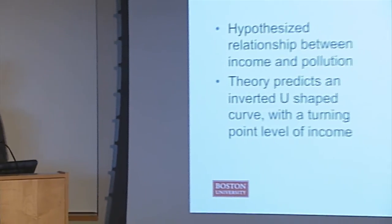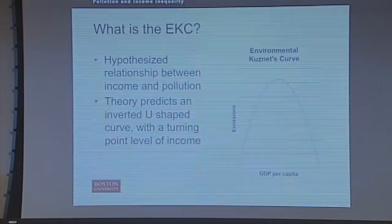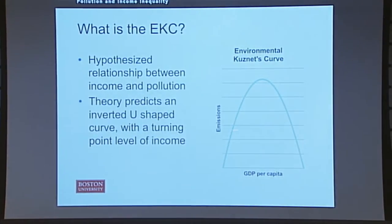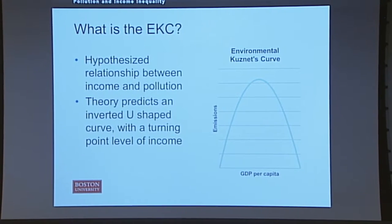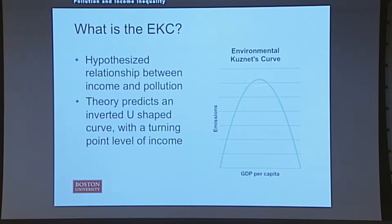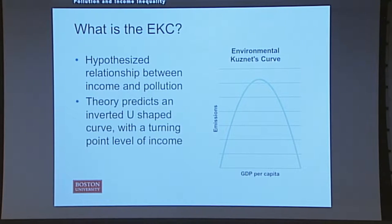The theory predicts an inverted U-shaped curve with a turning point level of income, where at a certain level of GDP per capita, as income rises, emissions also increase, but then begins to turn down and decrease at a certain level of income as people make choices to reduce their personal level of pollution that they create and or are exposed to.